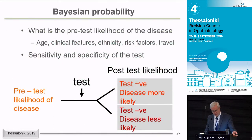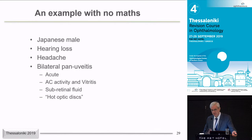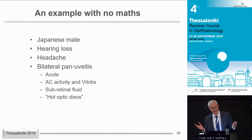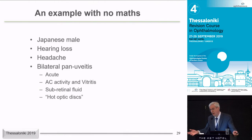We're all Bayesian clinicians, although we often don't realize it. We take a history and we do some tests. Here's a true patient case from a few years ago: a Japanese male with sudden hearing loss, pan-uveitis, acute anterior chamber activity, hot discs, and fluid. Anyone like to suggest a diagnosis?